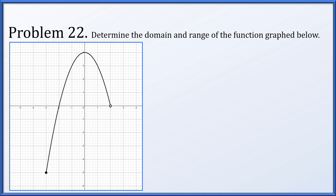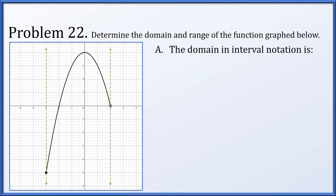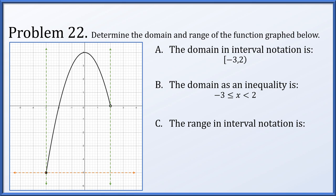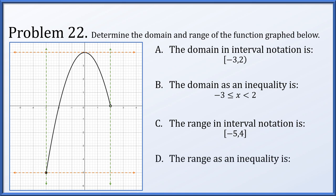Next, find the domain and range of the function graph. On the left there is a filled dot at x equals negative 3 and on the right an open dot. The domain includes x equals negative 3 but not x equals 2, giving the interval from negative 3 to 2, or in inequality notation negative 3 less than or equal to x less than 2. For the range, the lowest y value is negative 5 and the vertex is at height 4, both included. The range is the closed interval from negative 5 to 4, or negative 5 less than or equal to y less than or equal to 4.